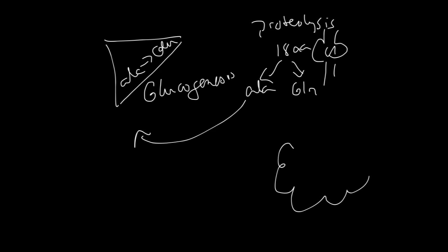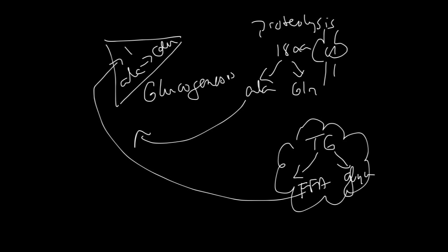The other tissue that is metabolized during fasting is your adipose tissue and the triglycerides that are stored are cleaved to free fatty acids and glycerol. The free fatty acids are used to make ketone bodies. The glycerol can be used for gluconeogenesis.